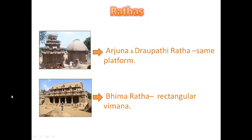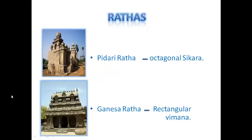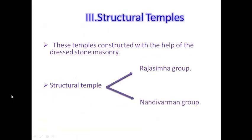The other 3 Rathas are Ganesha Ratha, Pidari and Valayakuttai. The Arjuna Ratha and Draupadi Ratha are on the same platform. The Bhima Ratha has a rectangular Vimana with a sanctum in the center. The Dharmaraja Ratha is a three-storied Vimana with a Garbhagraha in each story. The Sahadeva Ratha is an apsidal temple. Pidari Ratha has an octagonal Shikara, while the Ganesha Ratha has a rectangular Vimana with an Ardhamandapa in the front.